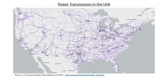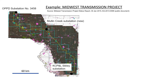Let's look at a recent example. Here's the power line we're going to consider — a small geographical area right in the center of the US called the Midwest Transmission Project. You can get an idea of the scale of this project by noticing the 60-kilometer bar on the map. This particular transmission line connects substation 3458 from the Omaha Public Power District down to the Kansas City Power and Light Sibley substation. It's not a very long power line — about 290 kilometers — and this project runs at 345 kilovolts.